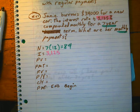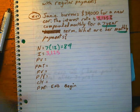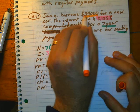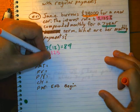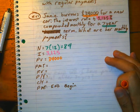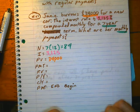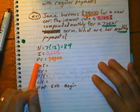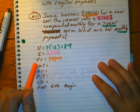The present value is what the loan is. So the loan is $34,000. PMT is what we're trying to figure out. What are the monthly payments?